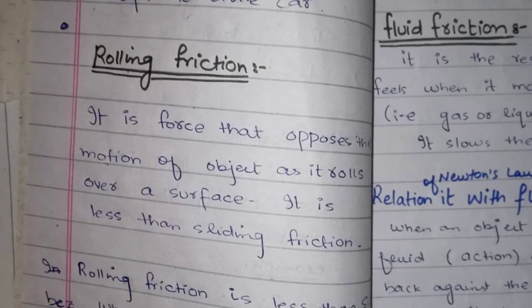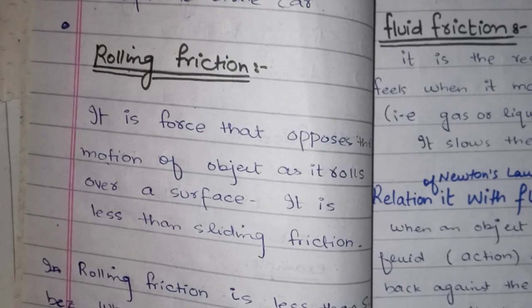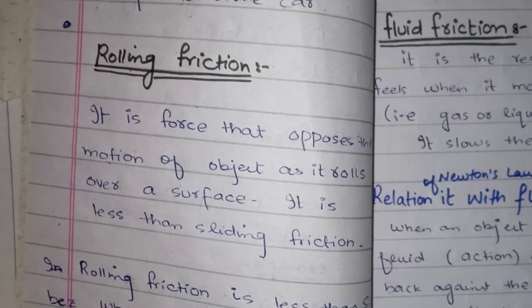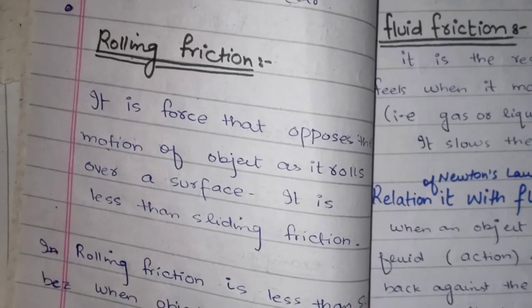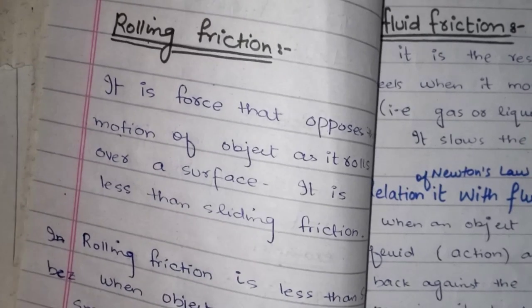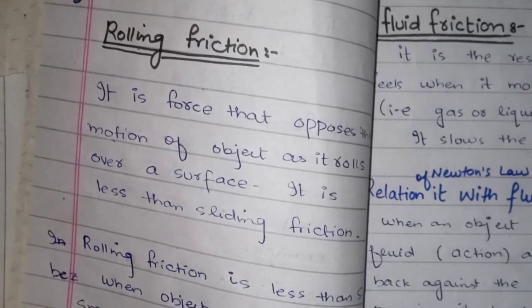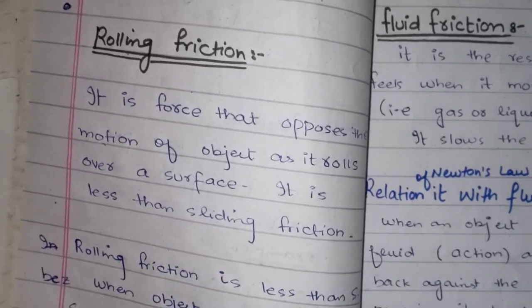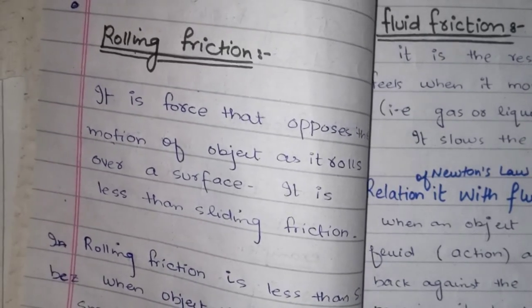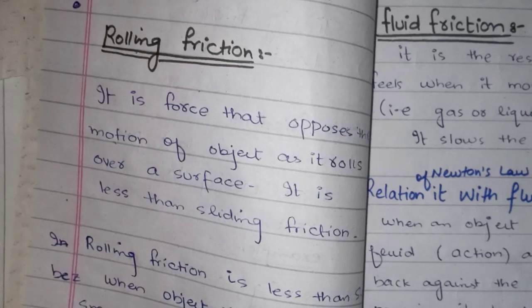Welcome to my YouTube channel. We have started Unit Number 4 from the National Book Foundation. The unit name is Dynamics, and today's topic is rolling friction, which we continue from the last lecture.